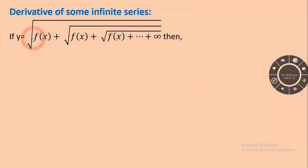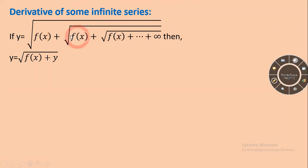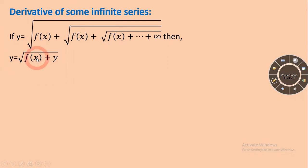In this case, you can see that y is equal to square root of f(x) plus the same repeating part. Since the series repeats, that repeating part is just y itself. So it can be written as y equal to square root of f(x) plus y.